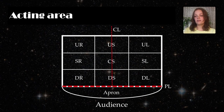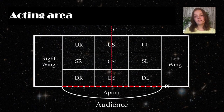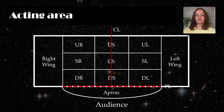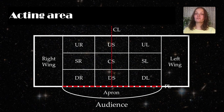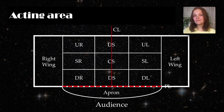In theater, the wings are the offstage spaces to the right and left of the acting area. These spaces are known as wings because they used to frequently use movable panels of scenery known as wing flats that were once stored in these spaces.